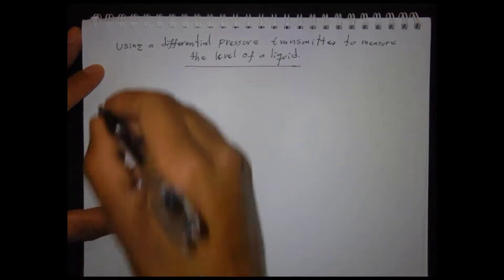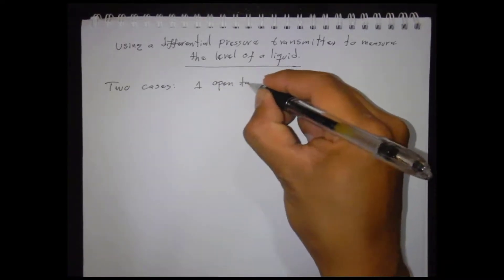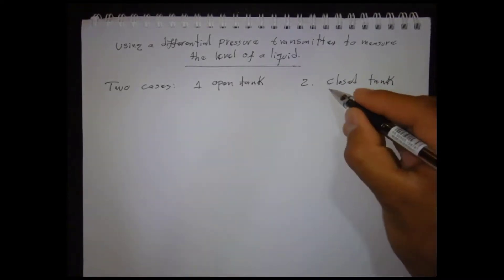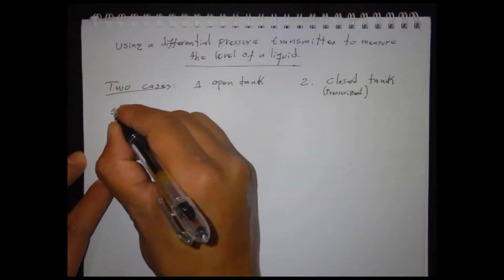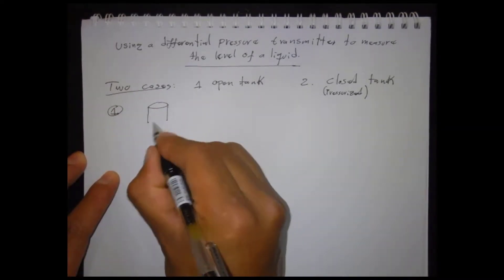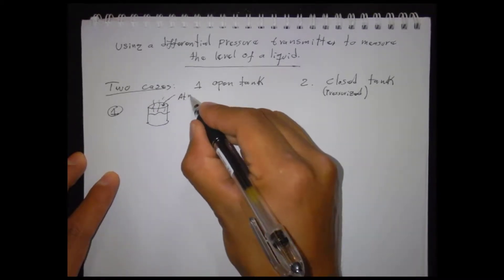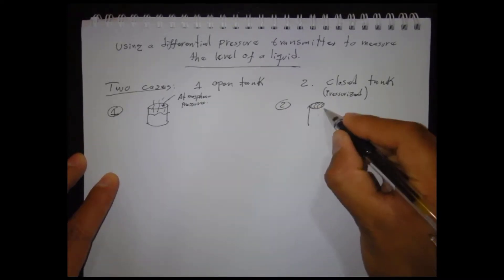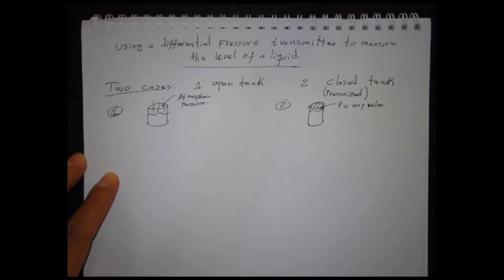We could measure a level either in an open tank or in a closed tank, that means a pressurized tank. We will evaluate these two cases. Case number one: an open tank means that it is open to the atmosphere and the pressure of the liquid is equal to the atmospheric pressure, which we will consider equal to zero in this case. Case number two: a closed tank means that the pressure inside the tank is a value different from atmospheric pressure, that could be positive, negative, or even zero.